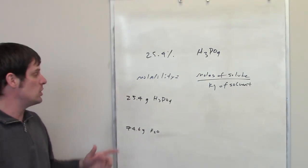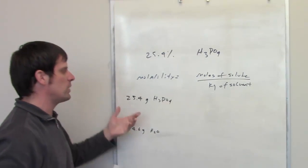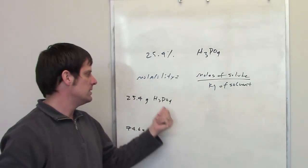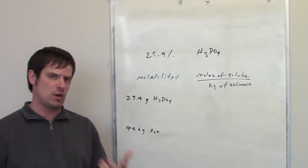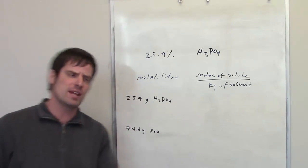So all I really have to do is figure out how many moles 25.4 grams of phosphoric acid is, and then I have to figure out how many kilograms 74.6 grams of water are.